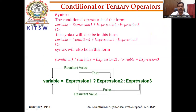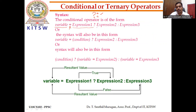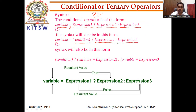The ternary operator uses the question mark and colon symbols. The syntax is: variable = expression1 ? expression2 : expression3. If expression1 is true, expression2 is executed. If expression1 is false, expression3 is executed, and the result is assigned to the variable.